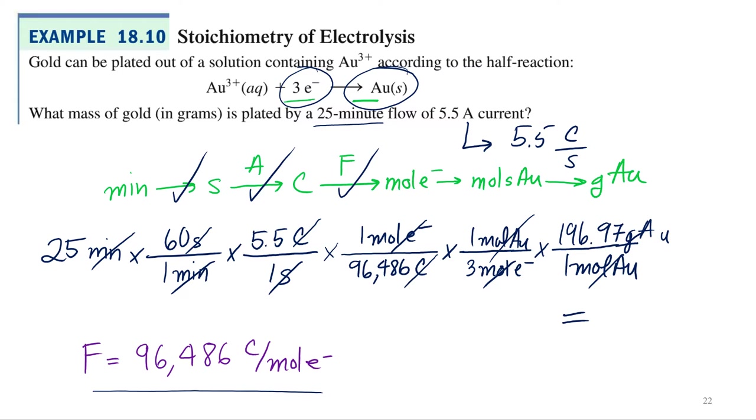Equals. So in our calculators, I'm going to take 25 times 60 times 5.5 divided by 96,486 divided by 3 times 196.97. 5.60. Probably going to have to cut this down to two sig figs because of the current and the time, 25 and 5.5. So 5.6 grams of gold.